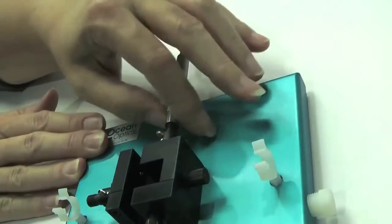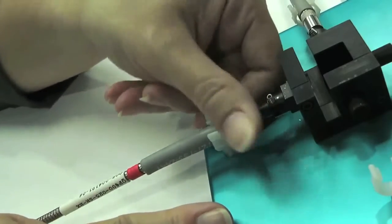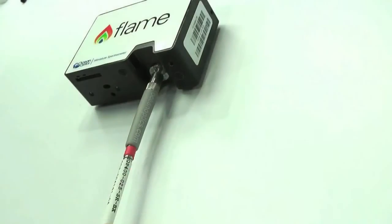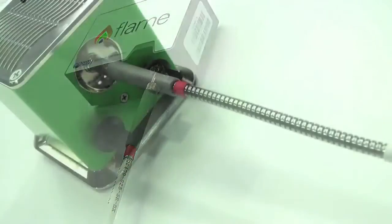Now attach the two fibers to the remaining SMA connectors at 90 degrees to each other. Connect the other end of one fiber to your spectrometer and of the other fiber to your light source.